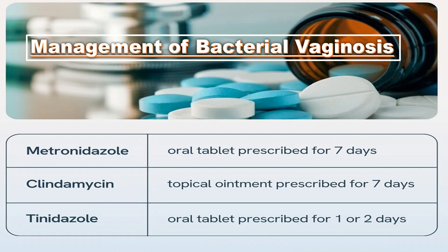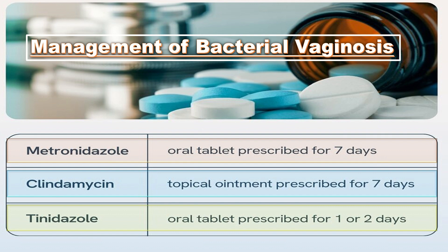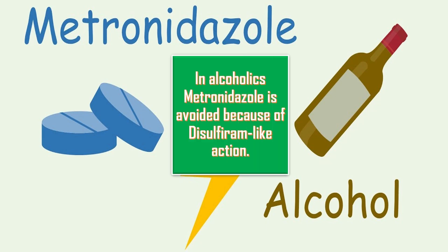Management of bacterial vaginosis includes metronidazole at a dose of 400 to 500 mg twice daily for 5 to 7 days. Clindamycin cream topical ointment is prescribed for 7 days. Tinidazole 2g once daily for 2 days, or 1g once daily for 5 days. In alcoholics, metronidazole is avoided because of its disulfiram-like action.